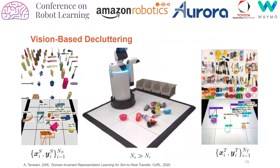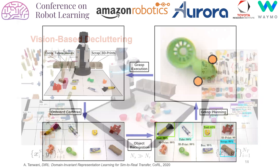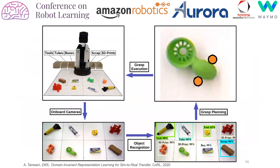We investigate the feasibility of vision-based decluttering by sim-to-real transfer with the proposed approach. We generate 20,000 simulation images using publicly available object meshes in the PyBullet simulator. Similarly, we collect 112 real images with the mobile robot HSR using commonly available household and machine shop objects. The robot declutters the environment by first recognizing the objects on the floor and subsequently planning the grasp points to pick them up and deposit them in the target bins.